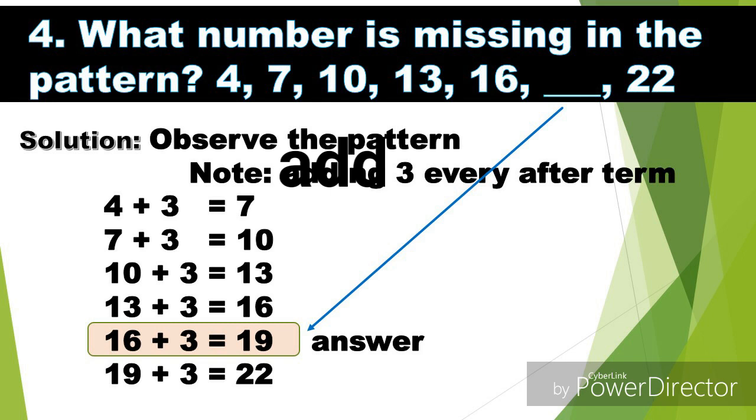Problem number four: what number is missing in the pattern? We have 4, 7, 10, 13, 16, blank, 22. Let's observe the pattern. Bawat term nagdadagdag tayo ng 3. So 4 plus 3 is 7, 7 plus 3 is 10, 10 plus 3 equals 13, 13 plus 3 is 16, and 16 plus 3 is 19. Therefore the missing term is 19. 19 plus 3 is 22.